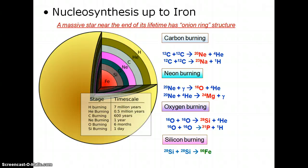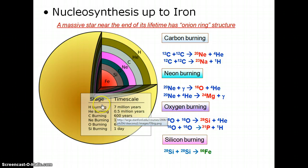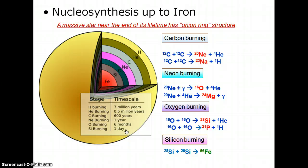Nucleosynthesis can occur up to iron. When a star is near the end of its lifetime, it has several rings but stops at iron. Carbon makes neon and sodium; neon is the stable isotope. Neons slam together to make oxygen, and oxygen slams together to make silicon. Notice the timescales: hydrogen takes the longest, then helium, then carbon. After carbon it gets super short — neon burning only happens for a year, oxygen burning for six months, silicon burning for one day — and then the star makes iron.